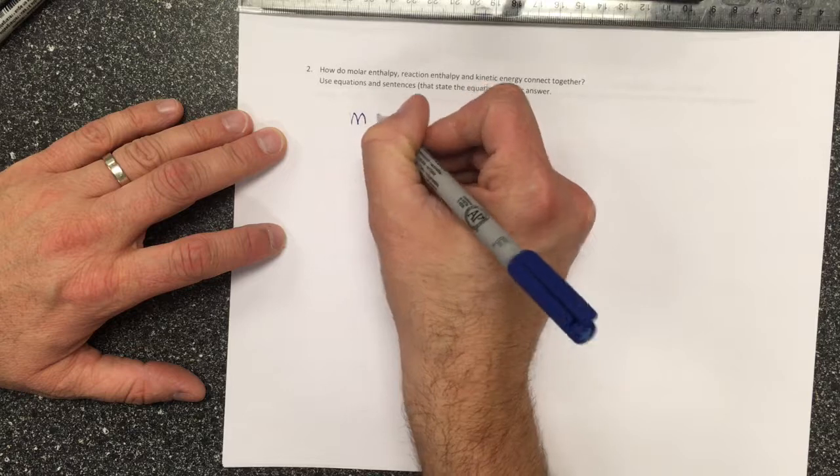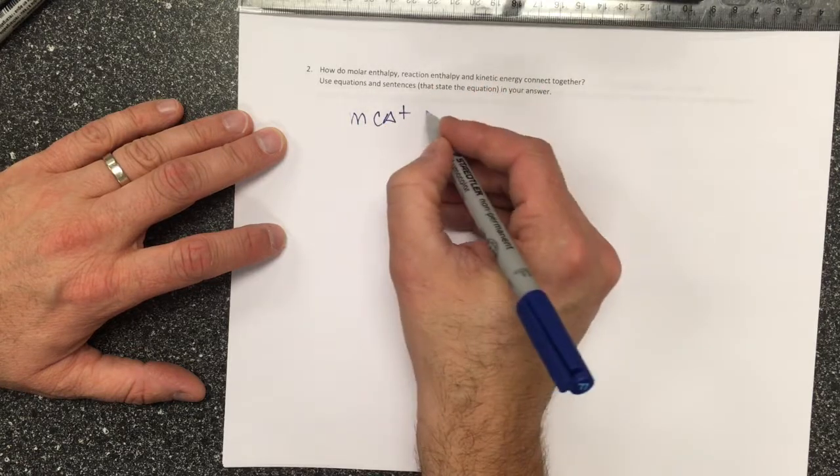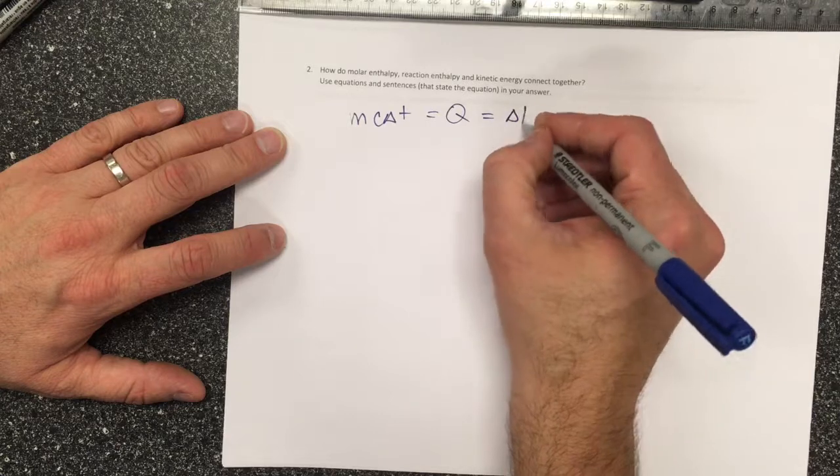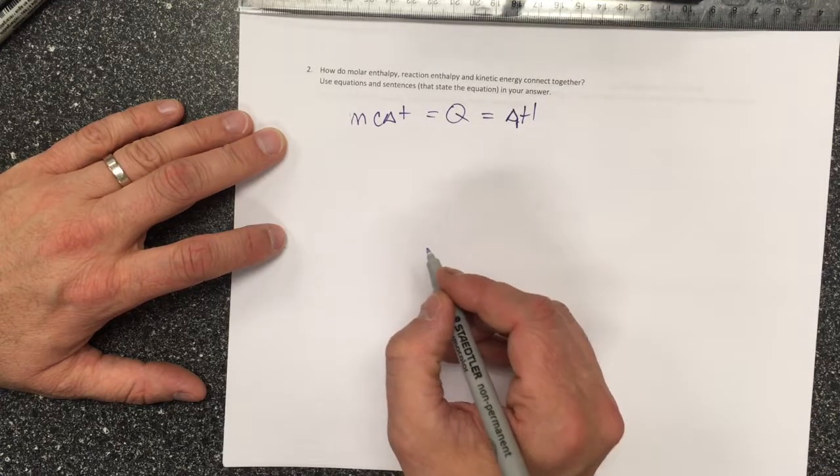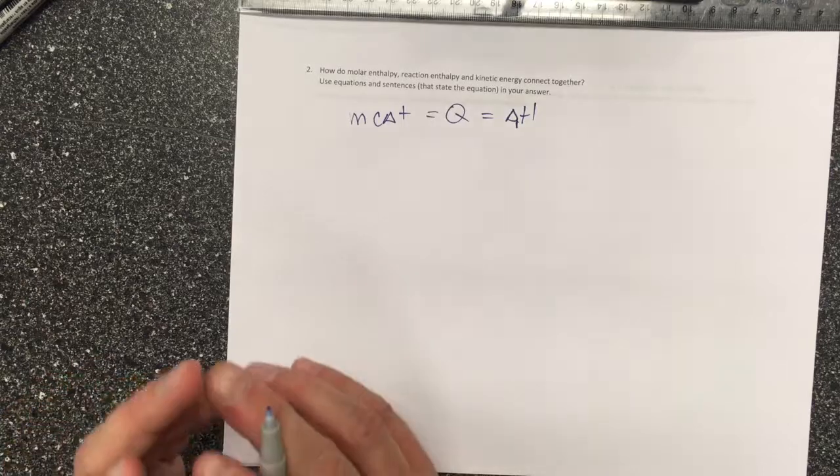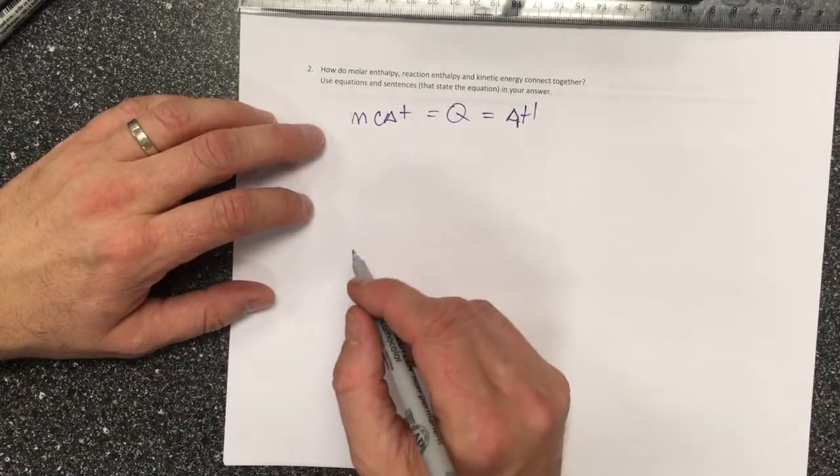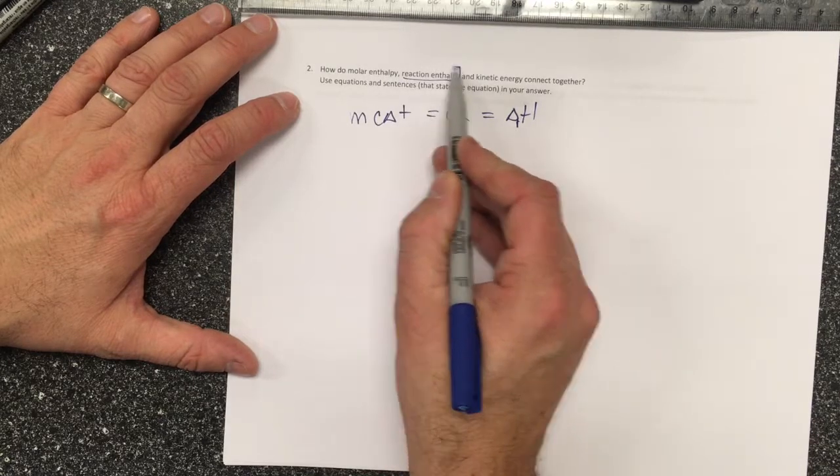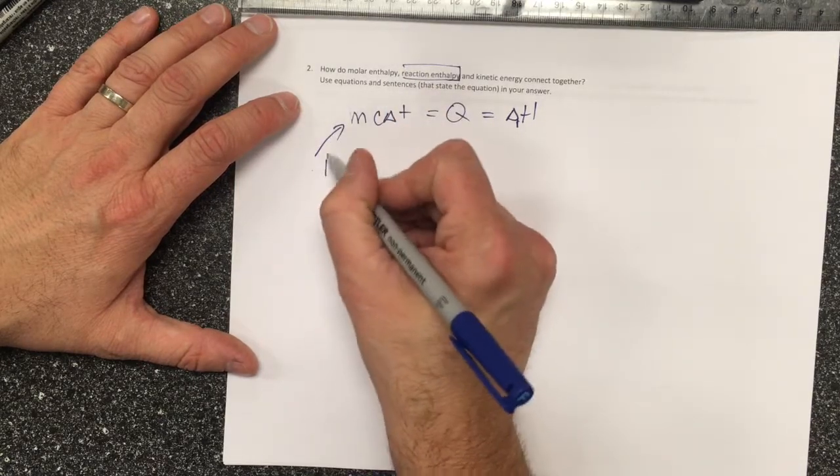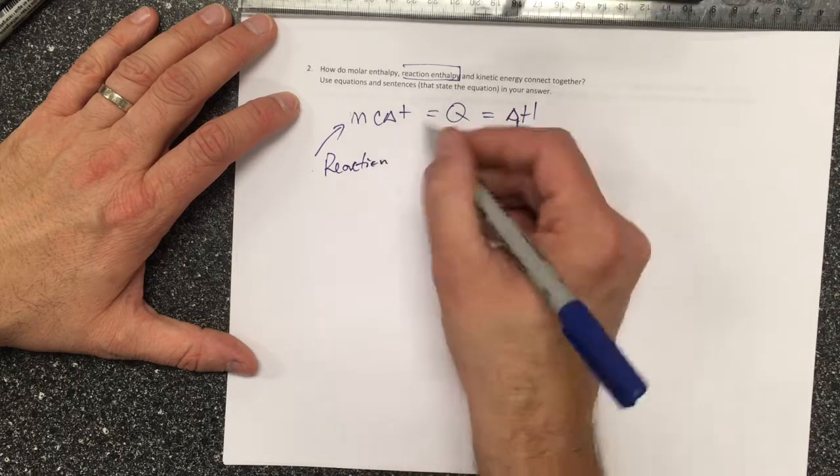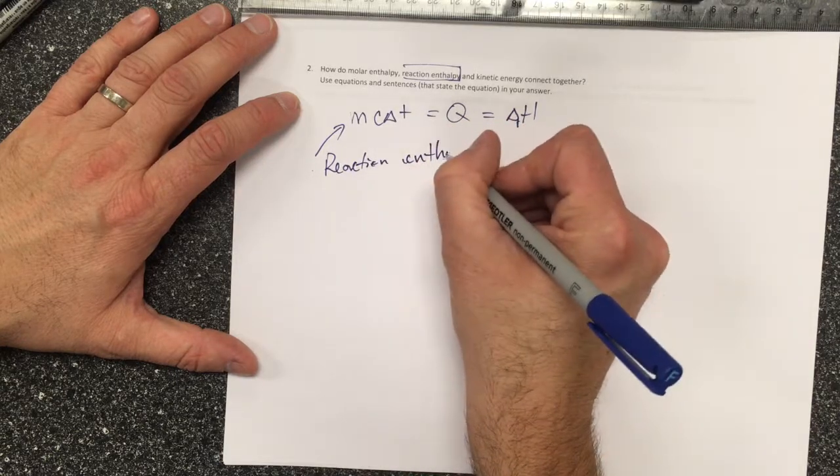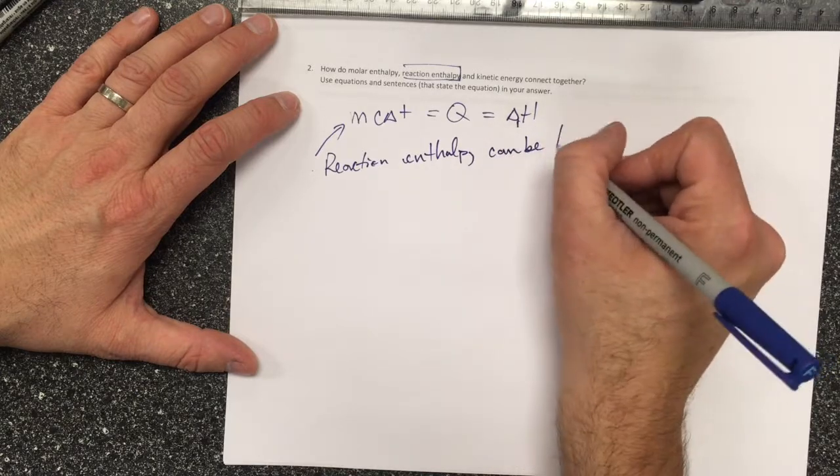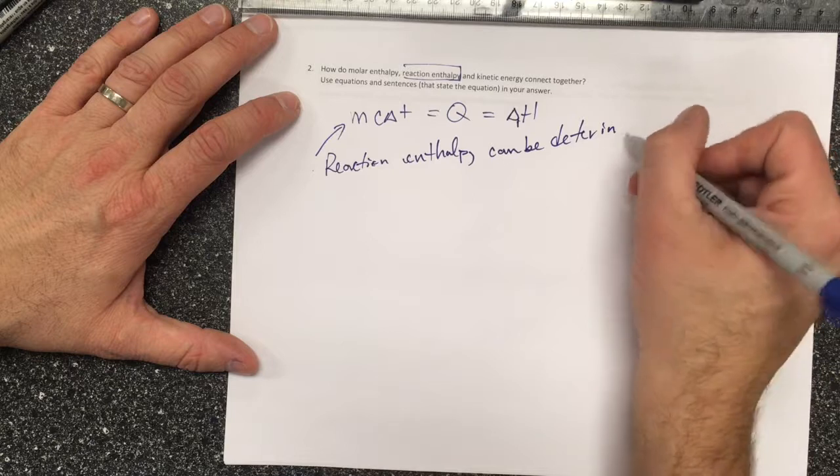The calorimeter equation, mcΔT, allows us to calculate Q. This is equal to the change in enthalpy of a reaction, ΔH, and that gives us joules, kilojoules, or megajoules. So that's our reaction enthalpy. Reaction enthalpy can be determined by calorimetry.